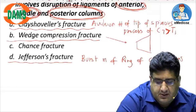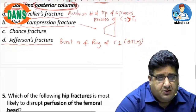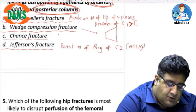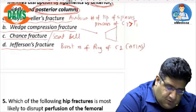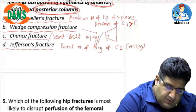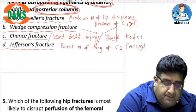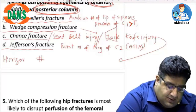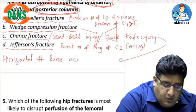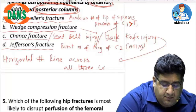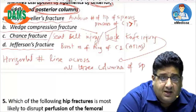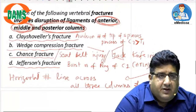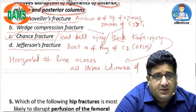Jefferson fracture involves the atlas, affecting both the anterior and posterior arches. Chance fracture is the one that goes through all three columns. It is also called a seat belt injury or jackknife injury. It is a horizontal fracture running across all three columns of the spine, breaking them all in one shot — very unstable with poor prognosis. The answer is Chance fracture.